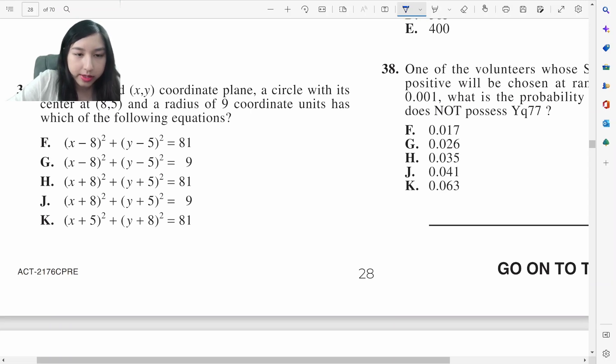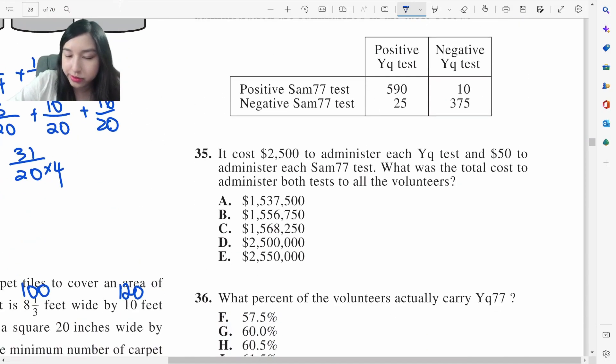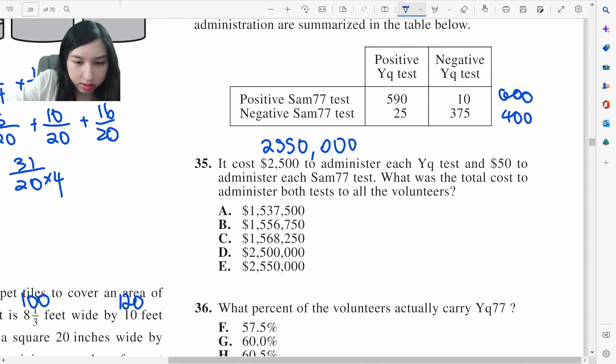Circle formula. So it's going to be negative 8 and negative 5, 81 plus 25 equals R squared, 9 squared, F. Long story, it goes straight to the problem. It costs this much to administer each test and 50 for that test. How much to administer to all the volunteers? Each person has to take two tests. So it takes 2,500 per person. And how many people are there? 600, 400, 1000 people multiplied by 1000. We just add three zeros. E. There we go.